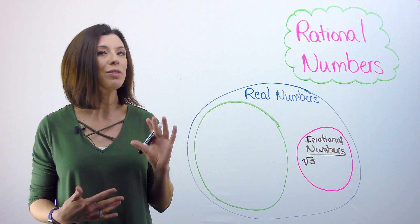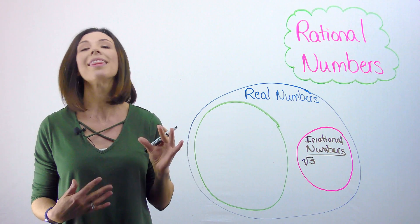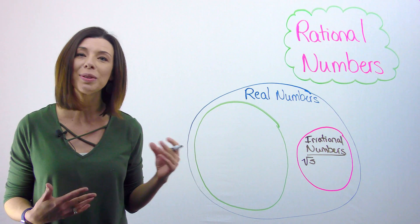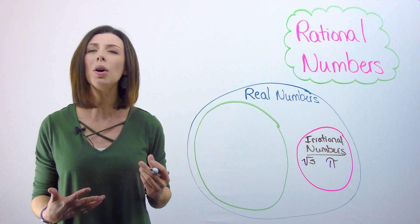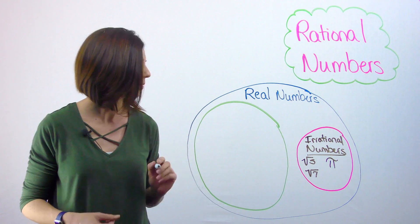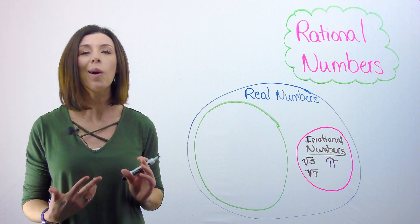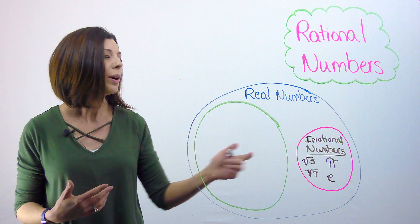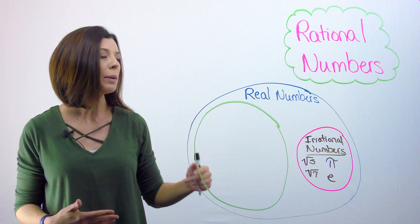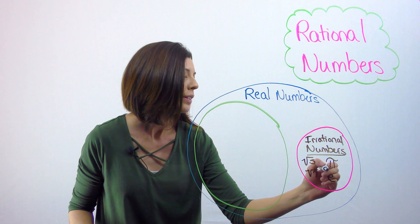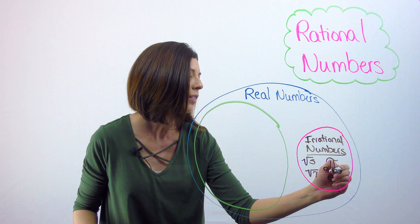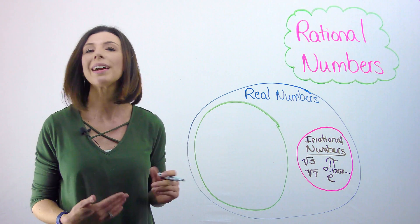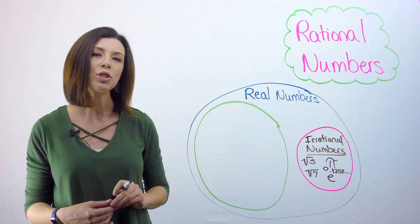Another example is pi. If you're thinking 3.14 is pi, remember that's just the approximation we use. Pi is actually irrational because it keeps going forever into infinity. The square root of 7 and the natural logarithm base e are also irrational. Finally, a decimal that doesn't end or repeat — like 0.1358... continuing forever — would also be an irrational number, because you can't convert it into a simple fraction.